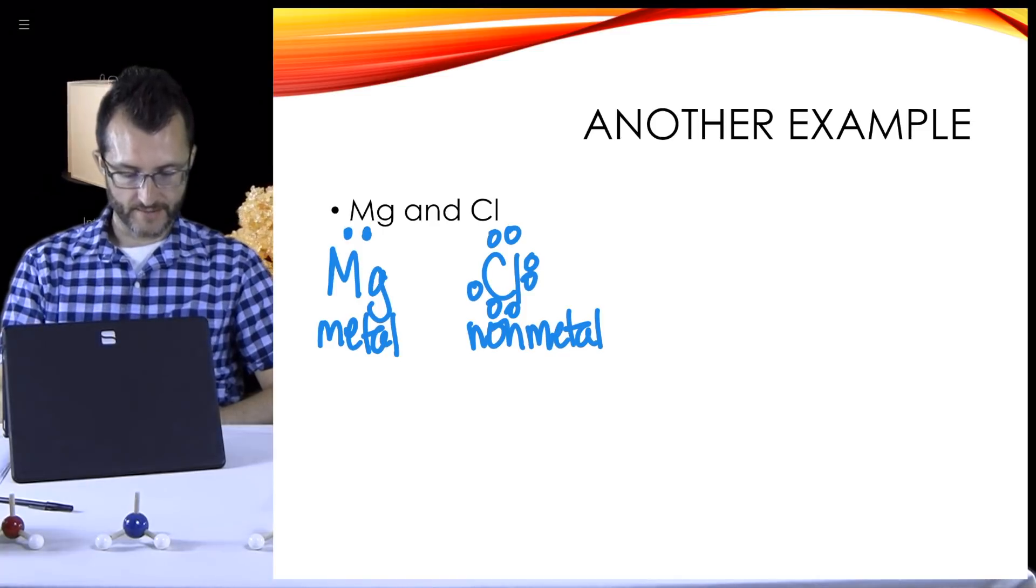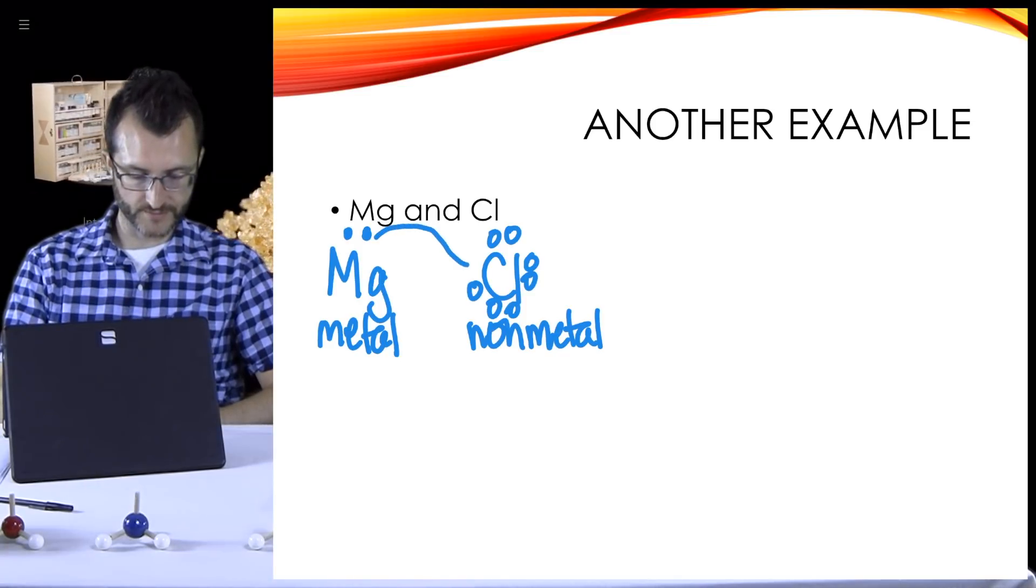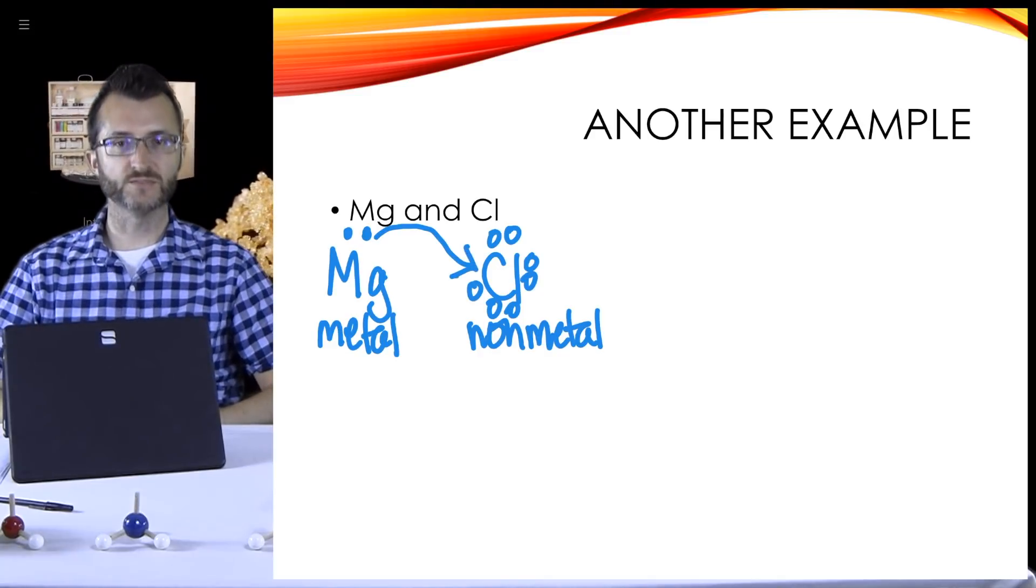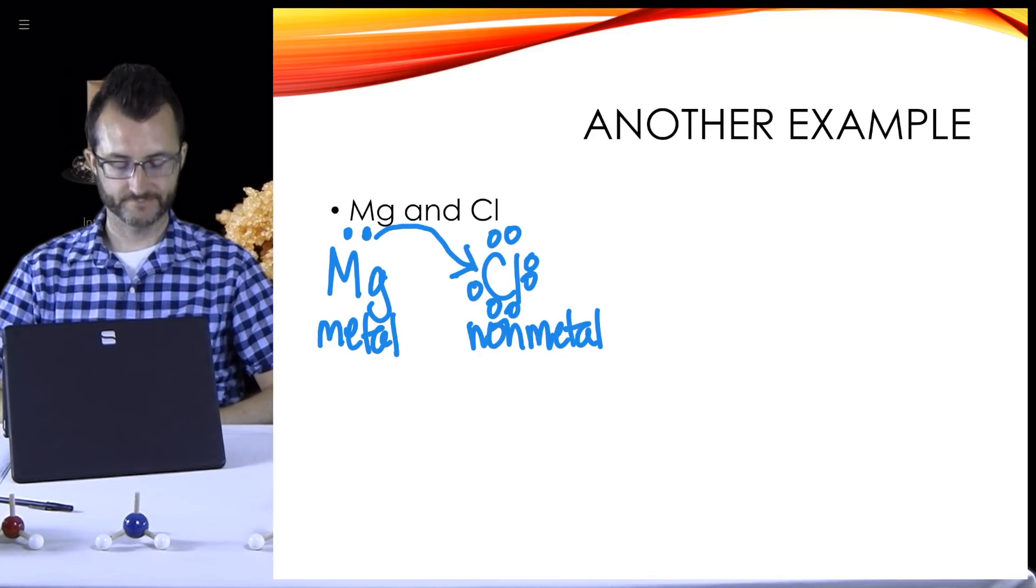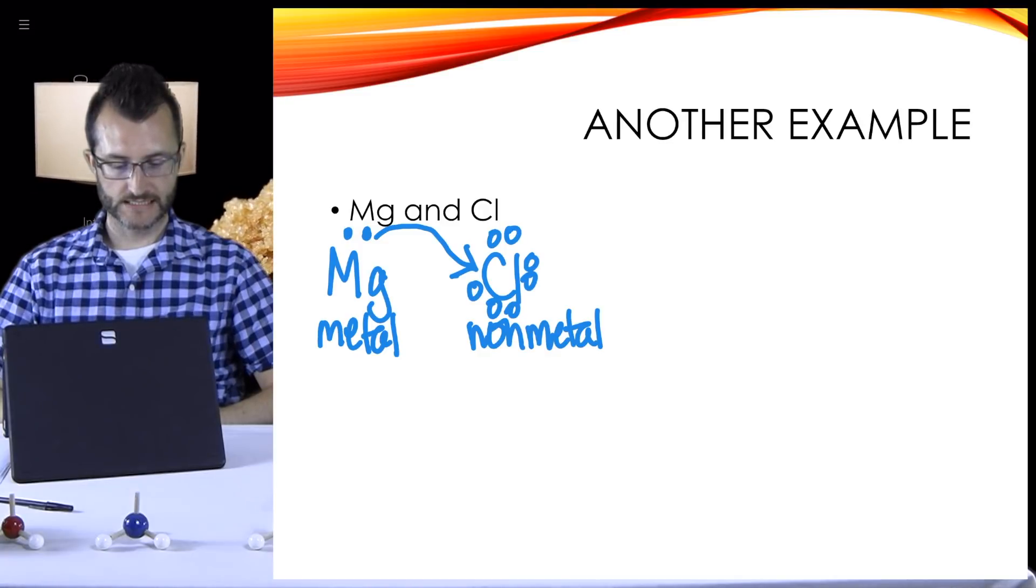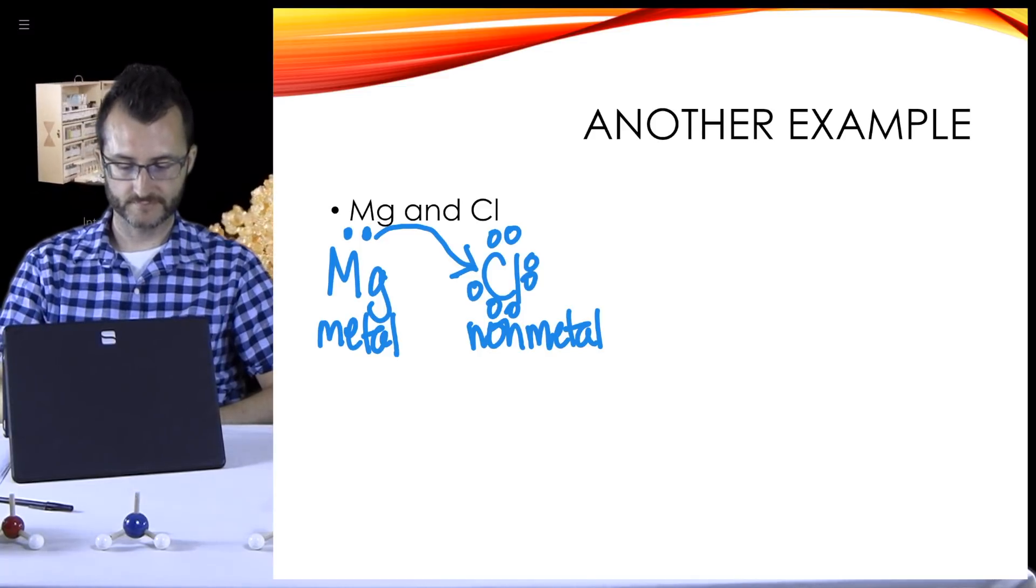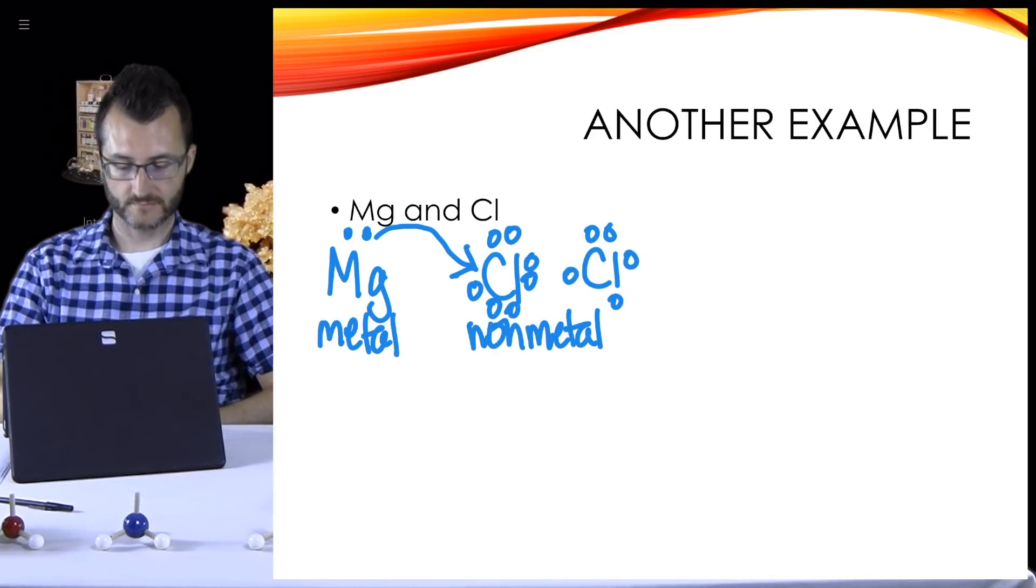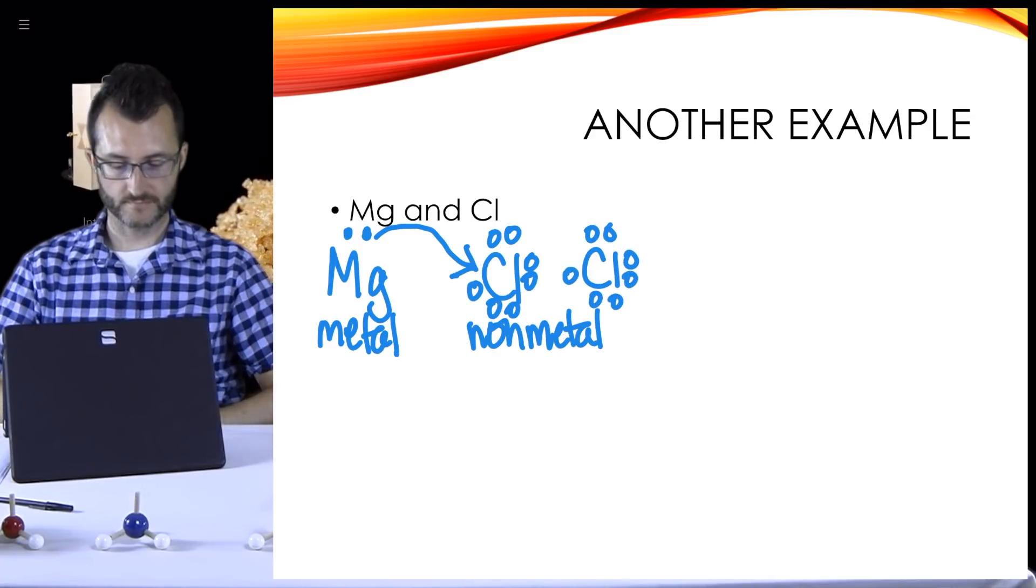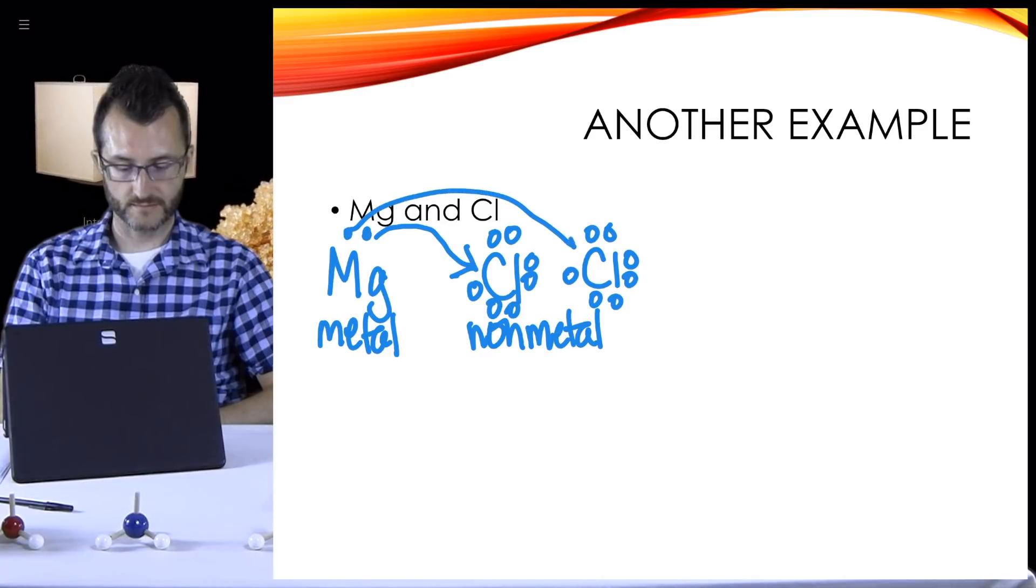This is metal and non-metal. This is ionic again. So let's show that transfer of electrons. Well, Mg needs to lose two, but it looks like chlorine only needs one. So it looks like magnesium needs a little more help here. What do you think is going to happen?